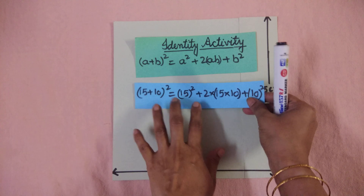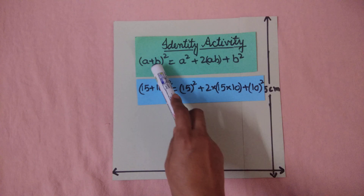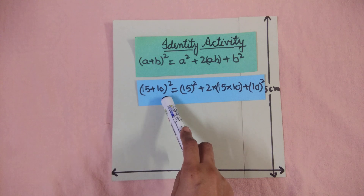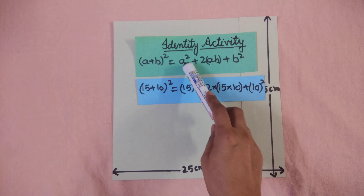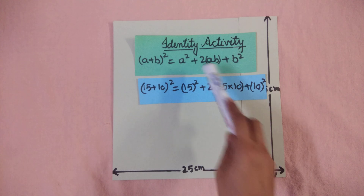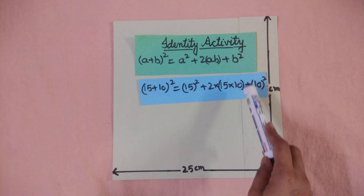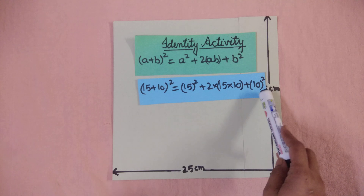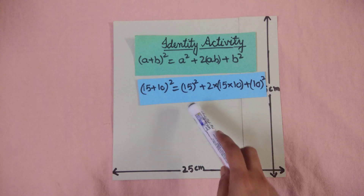Now here I have taken the value of a as 15 and the value of b as 10. So if we substitute a as 15 and b as 10 in the given formula or identity, we will get: 15 squared plus 2 times 15 times 10, and instead of b we take 10, so b squared means 10 squared.